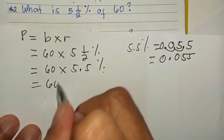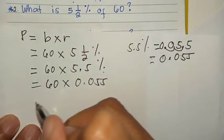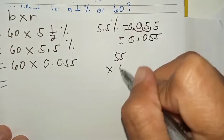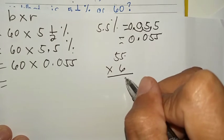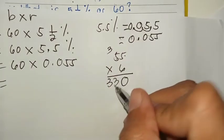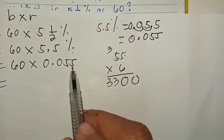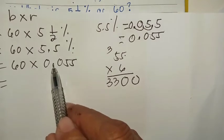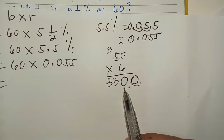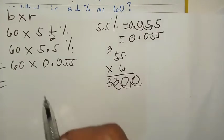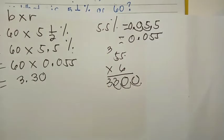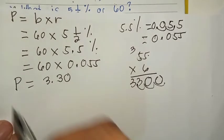Multiply this to sixty. Sixty times fifty-five thousandths. The answer is: fifty-five times six. Six times five is thirty. Carry three. Five times six is thirty, plus three is thirty-three. We attach the zero here. Then, since there are three decimal points, or thousandths, we move three decimal places. One, two, three. The answer is three and thirty hundredths. So, that is the part.